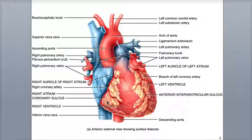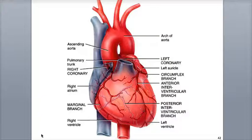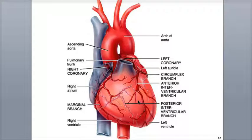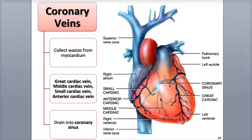If the coronary arteries do become blocked, the heart's blood supply will be reduced, leading to oxygen deprivation of cardiac muscle fibers. If the blockage continues for many years, it may cause a heart attack, also called a myocardial infarction. In the coronary circulation, oxygenated blood leaves the coronary arteries and moves into the capillaries, where oxygen and nutrient exchange occur with the myocardial tissues. Carbon dioxide and wastes are picked up by the bloodstream, and this deoxygenated blood is then carried into the coronary veins.